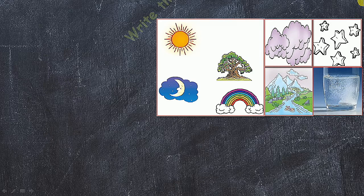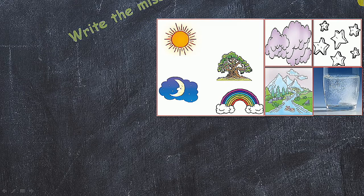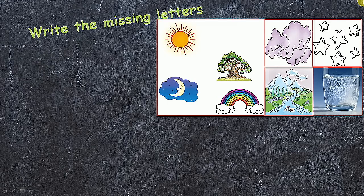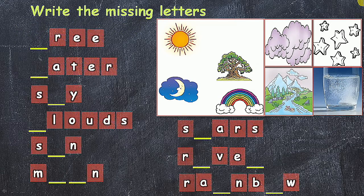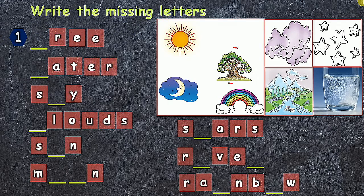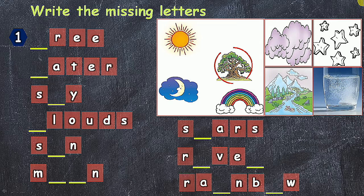Write the missing letters. In first one, that is tree, T is the missing letter. T-R-E-E, tree.